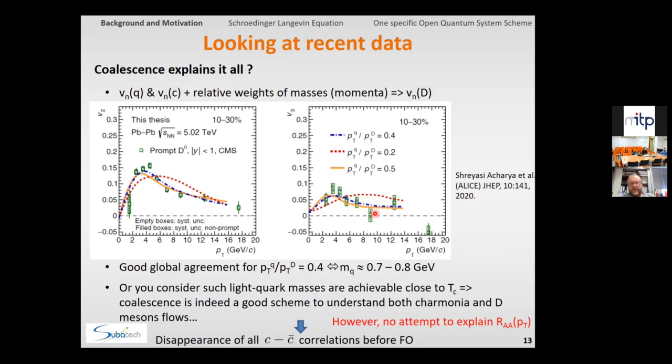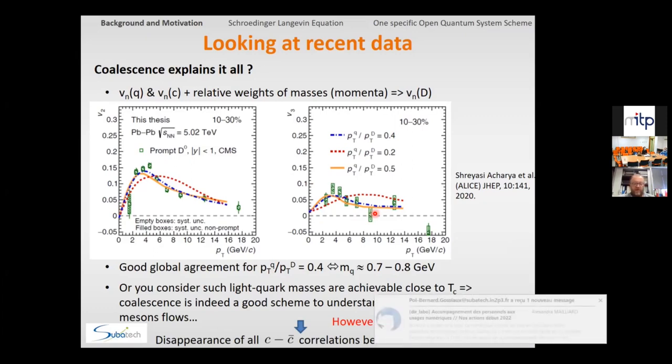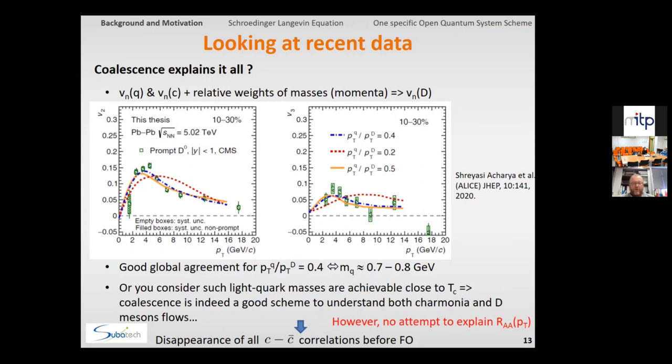But in the end, if you believe that this ratio here is reasonable, then you can also achieve a reasonable global agreement with the experimental data, as far as the V2 and V3 are concerned. Of course, they did not attempt to explain it the same way, at least to my knowledge, but in any case this would lead towards the disappearance of all cc-bar correlations before freeze-out, as it is also postulated in some approach like statistical hadronization model.